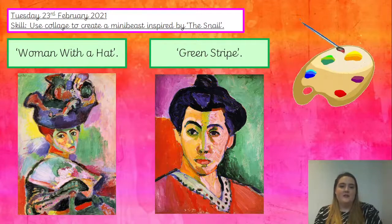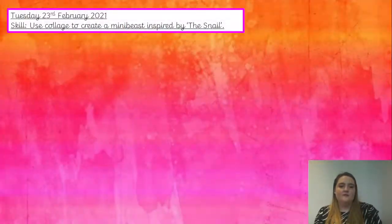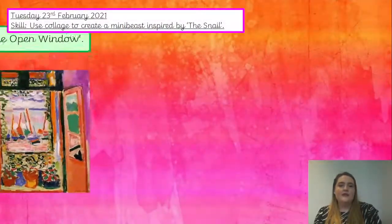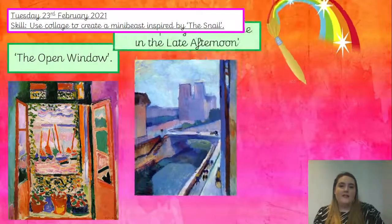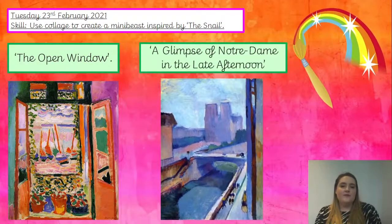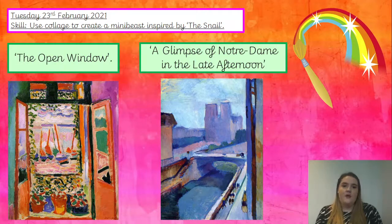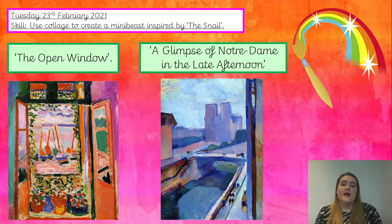You can see lots of bright colours in those two, can't you. Let's have a look at two more. This painting is called The Open Window — this is one of my favourites. And this one is called A Glimpse of Notre Dame in the Late Afternoon. Once again, I'd like you to look at the use of shape and colour in these paintings. Pause the video and discuss this now.